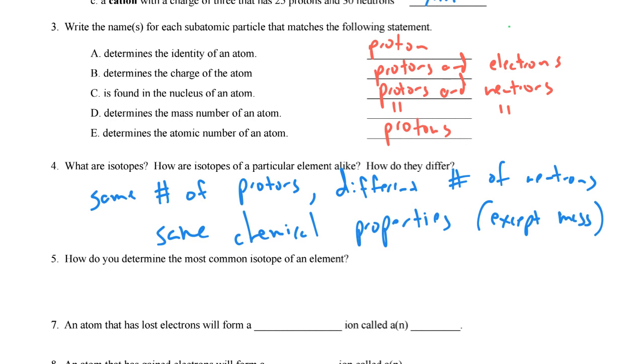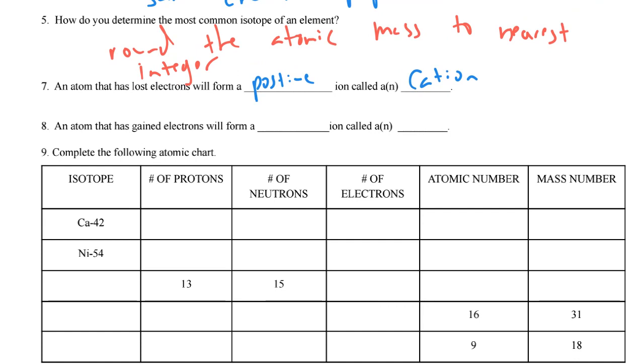So what are isotopes? How are isotopes of particular element alike? How are they different? So let's keep this short. It is same number of protons, different number of neutrons. Same chemical properties, except mass. But the mass will be very similar between isotopes, but just slightly different because of some added neutrons. But if this is in a biological system, they're treated the exact same, and isotopes can be very useful in tracking where different elements go. So how do you determine the most common isotope of an element? Very simple. You're going to round the atomic mass to nearest integer.